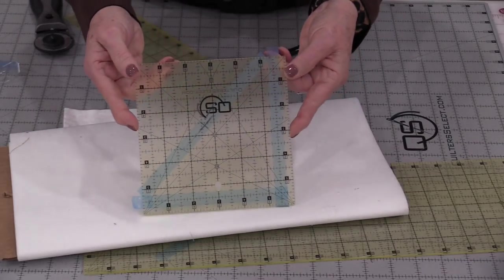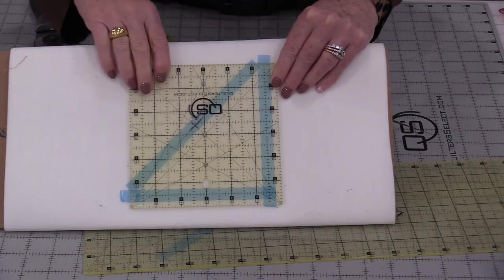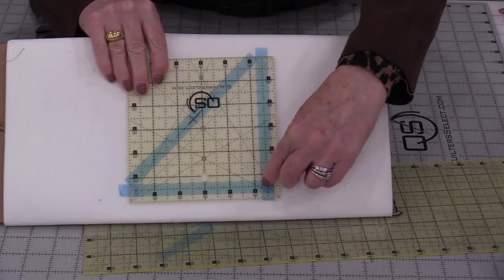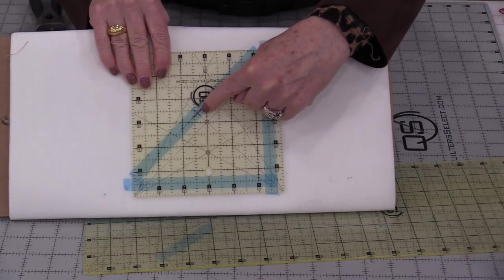We can also use that tape to mark our square rulers. I need a smaller square than the ruler that I have so I'm marking the edge where the fabric is going to go and I also am going to mark a center.